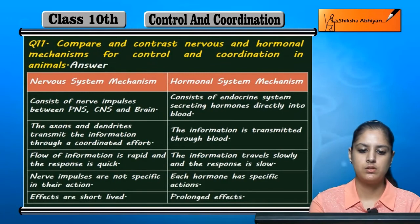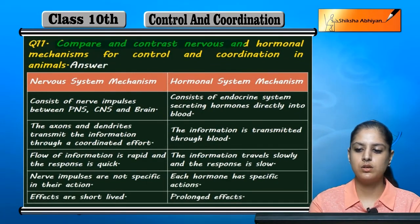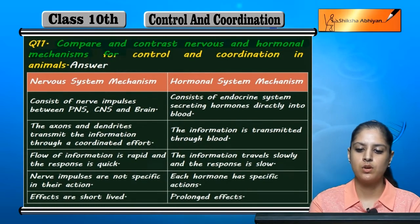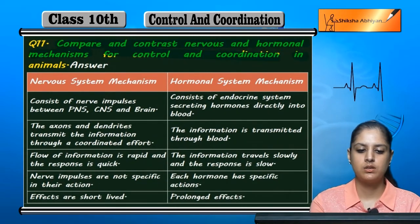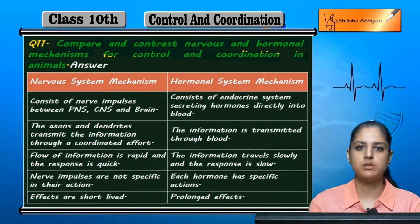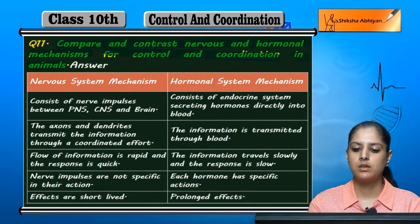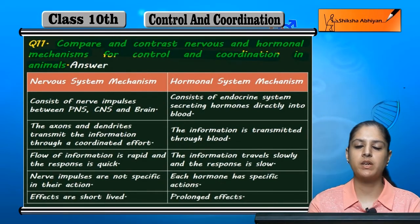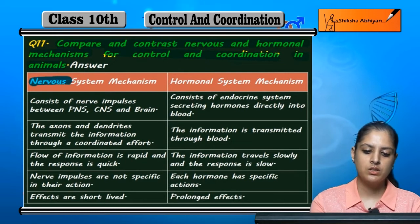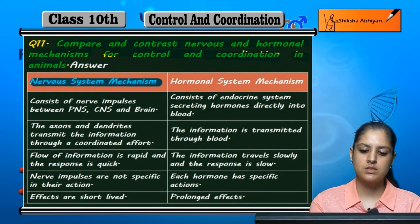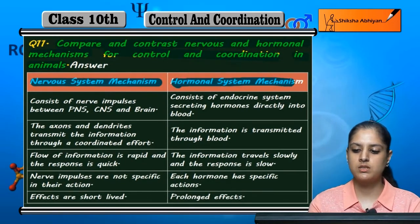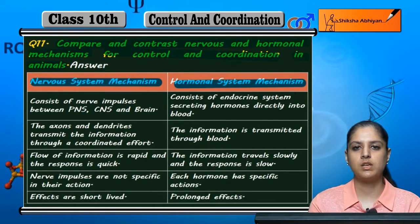Question 11: Compare and contrast nervous and hormonal mechanisms for control and coordination in animals. We compare the nervous and hormonal mechanisms, differentiating between the nervous system mechanism and hormonal system mechanism.